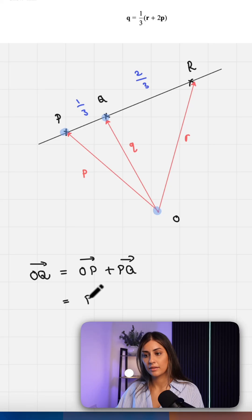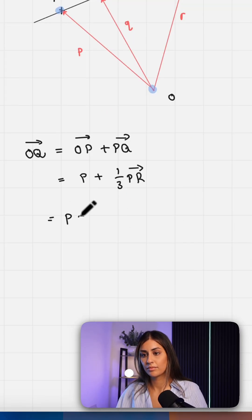So O to P is P. P to Q is one third of P to R.